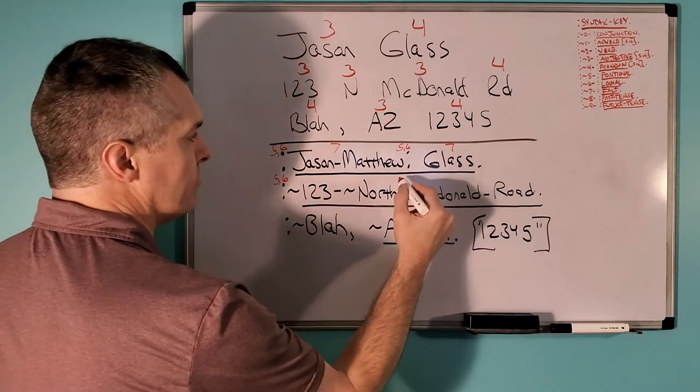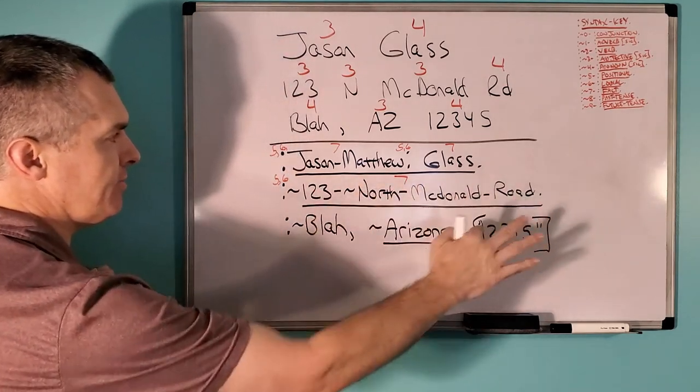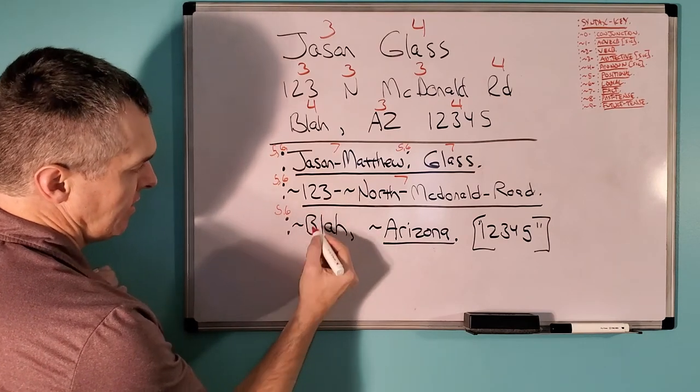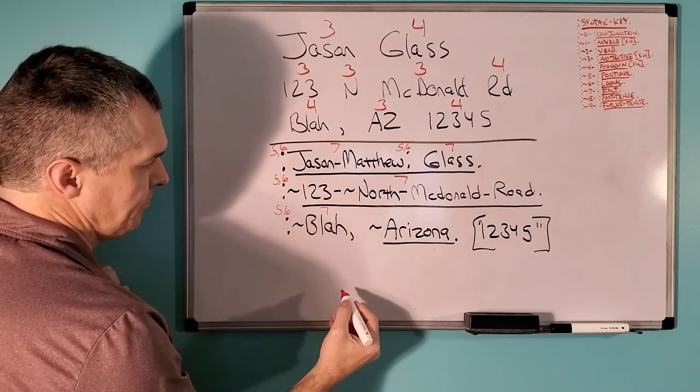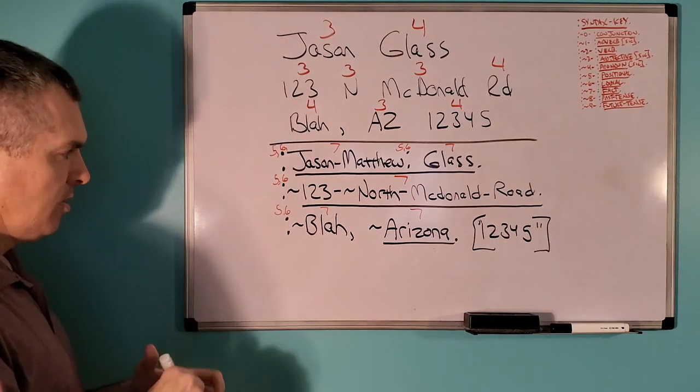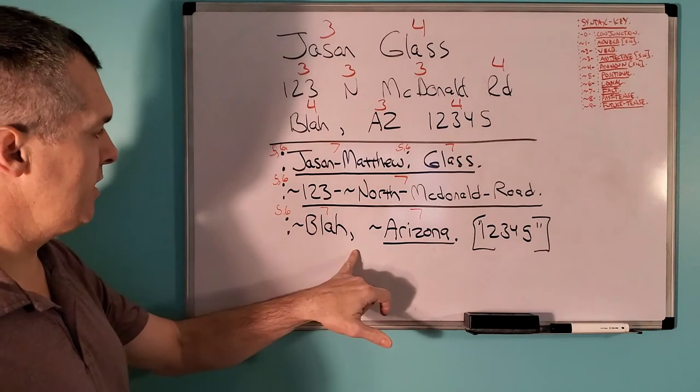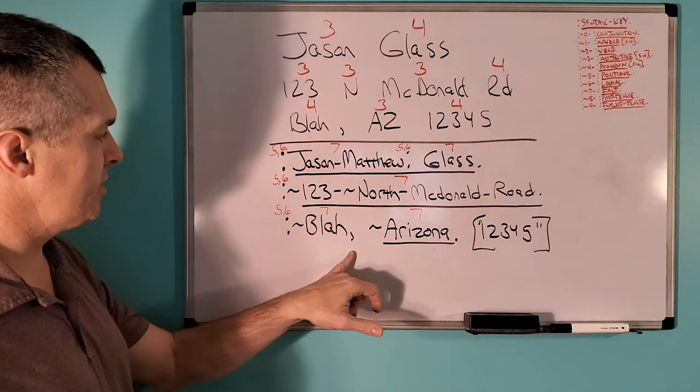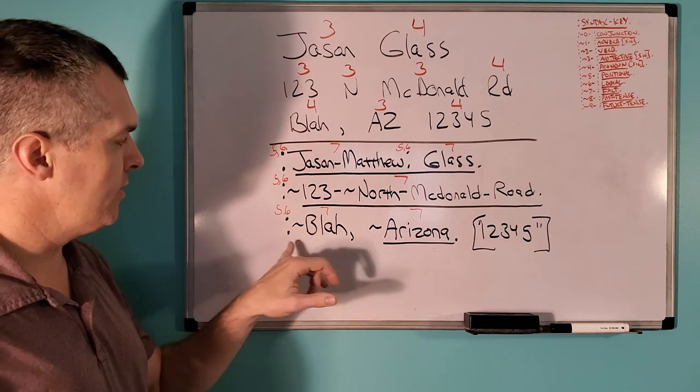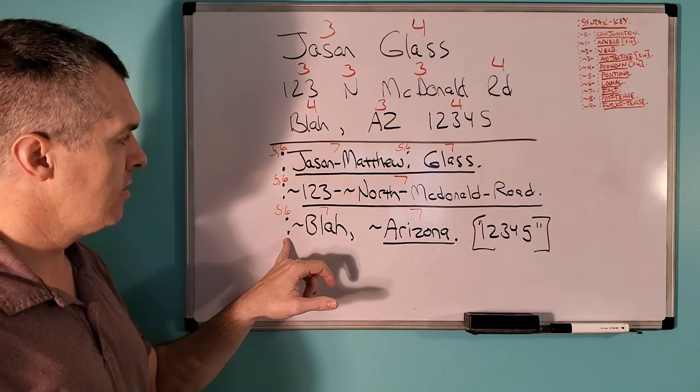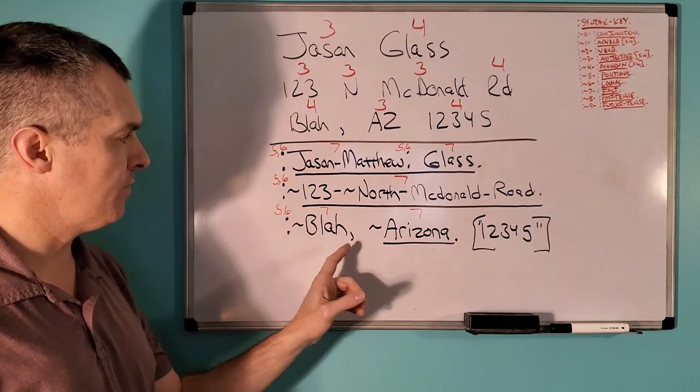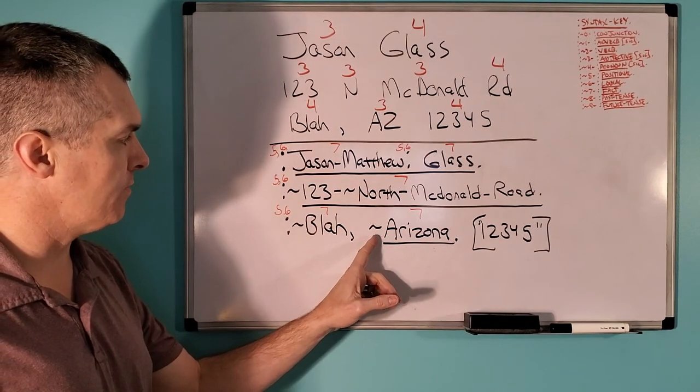Again, same thing. 5, 6. 1, 2, 3, North McDonnell Road would, in its entirety, be a 7. Then another 5, 6, 7, 7. Because this has already been positioned for the blah, comma, this for the also positions Arizona. Therefore, I don't have a colon in front of this tilde here.